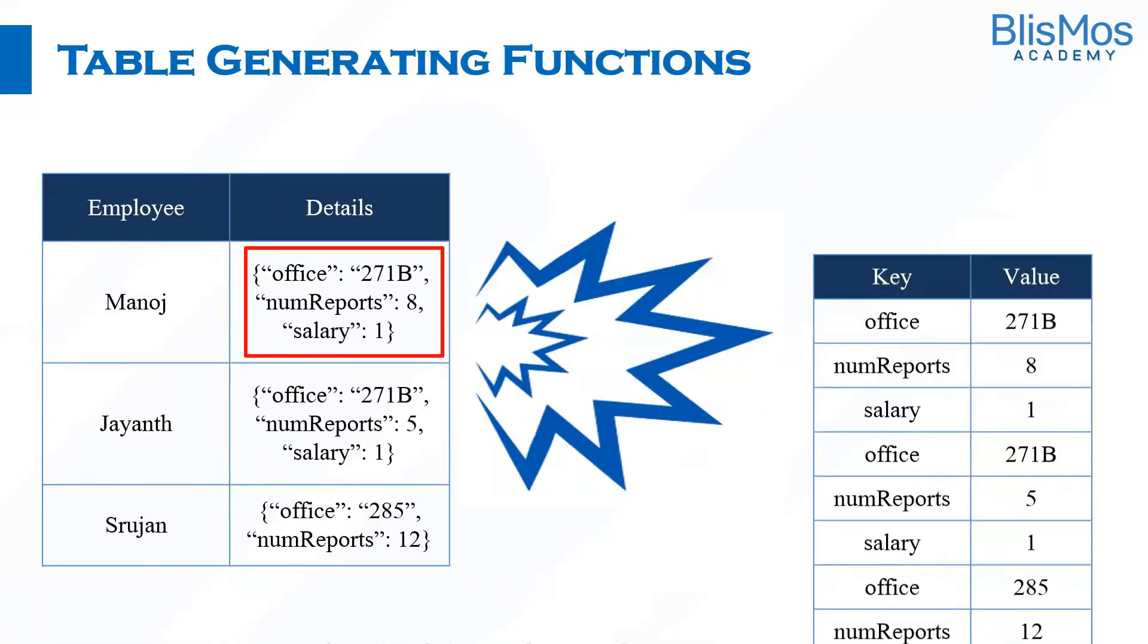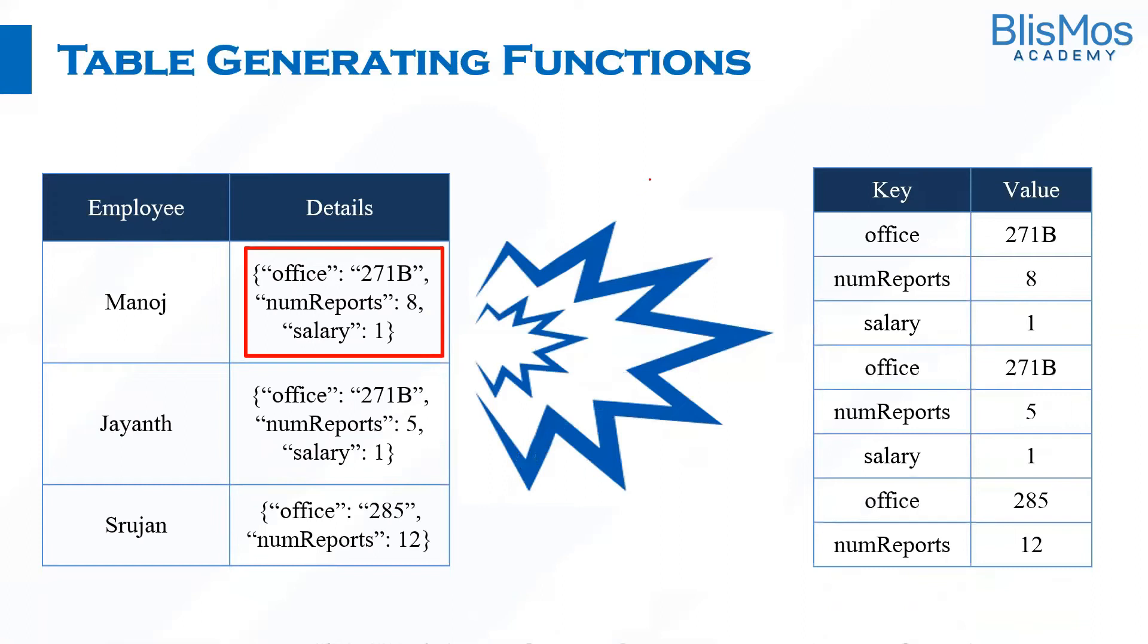We can also do this with the maps. For example, here, this particular column is of map type. We have a key and value. In this case, if we explode this, this one row would become these three rows. You can see office and 271B, number of reports 8, salary 1. This one row is exploded as three rows. This is a map data type.